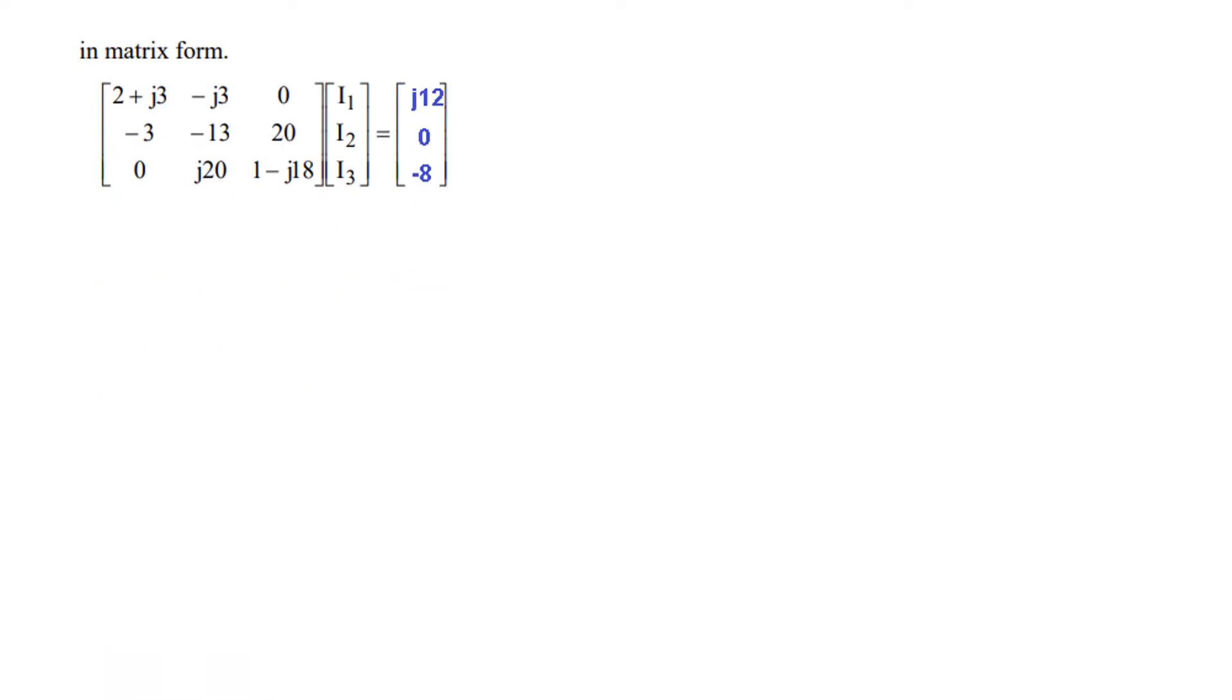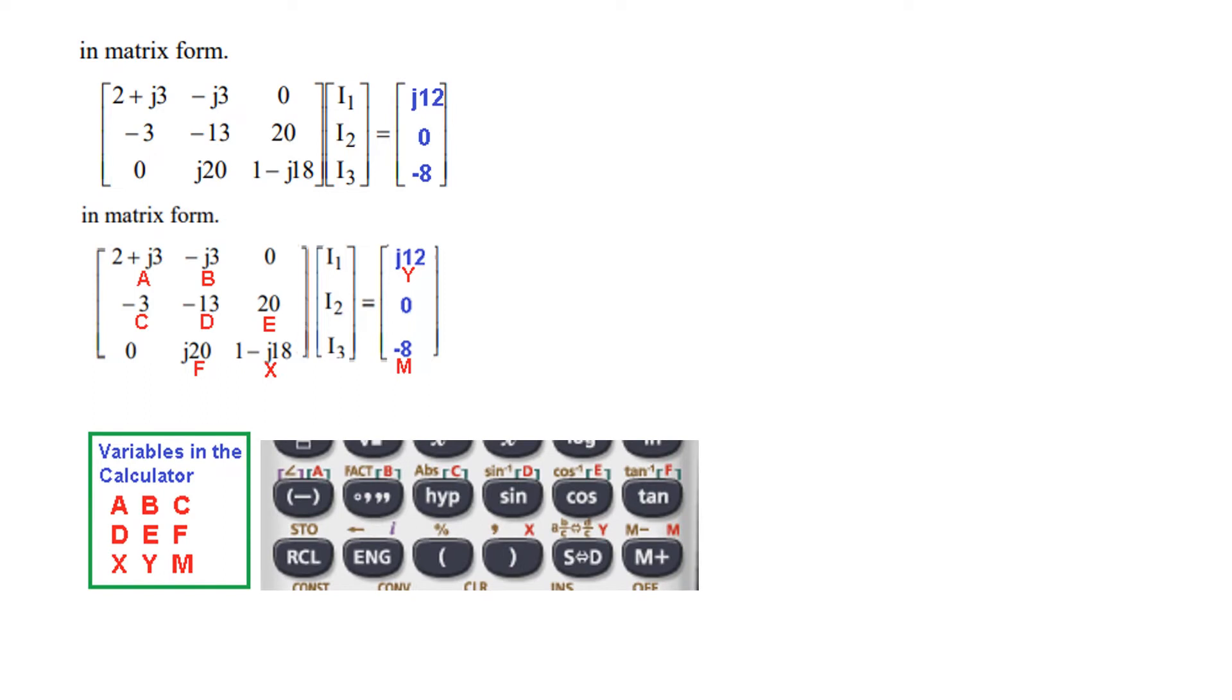This was the matrix. The first thing we'll do is assign it some variables as shown here. We'll assign this as A, B, 0 remains as it is, then C, D, E, F, X, Y, and M. How many values can we assign? Up to 9, because from the calculator you can see these are the values: A, B, C, D, E, F, X, Y, M. So we can assign all these 9 values, no more than that.